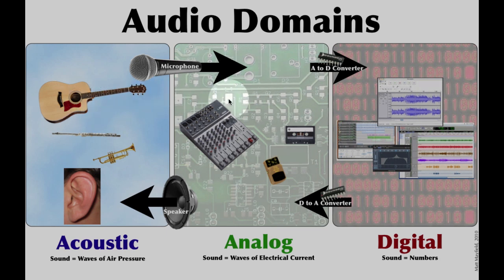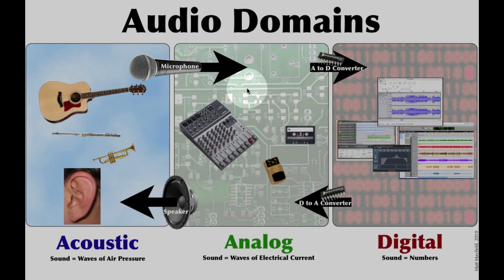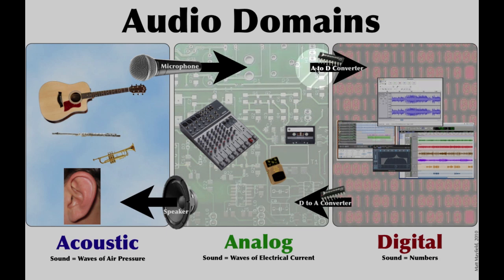Now that you've got the sound in the analog world, if you're using analog recording equipment, you would record it to a magnetic tape, or use a mixer to run into an amplifier and through a speaker for a live show. Or if you're recording digitally, the sound is only in the analog world for a brief moment, just long enough for the voltage to reach the analog to digital converter.